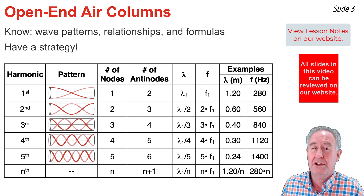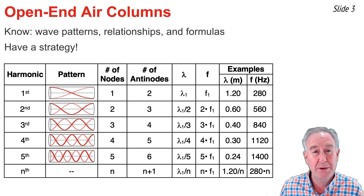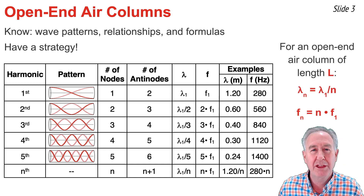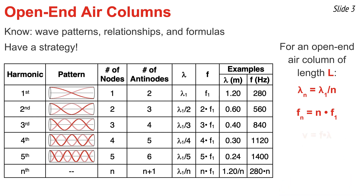These calculations are done for a 60-centimeter length air column. To summarize the formulas used to solve open-end air column problems: the wavelength of the nth harmonic equals the wavelength of the first harmonic divided by n; the frequency of the nth harmonic equals the frequency of the first harmonic multiplied by n; the speed-frequency-wavelength equation states v equals frequency multiplied by wavelength — be sure to use frequency and wavelength for the same harmonic; and the wavelength of the nth harmonic can always be calculated as (2/n) times the length of the air column.